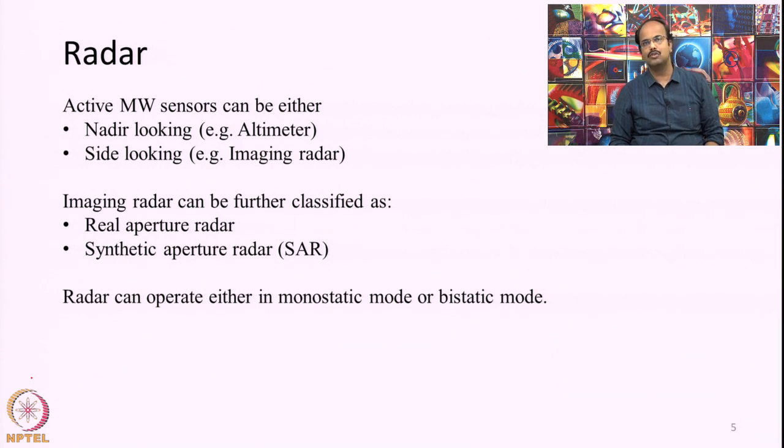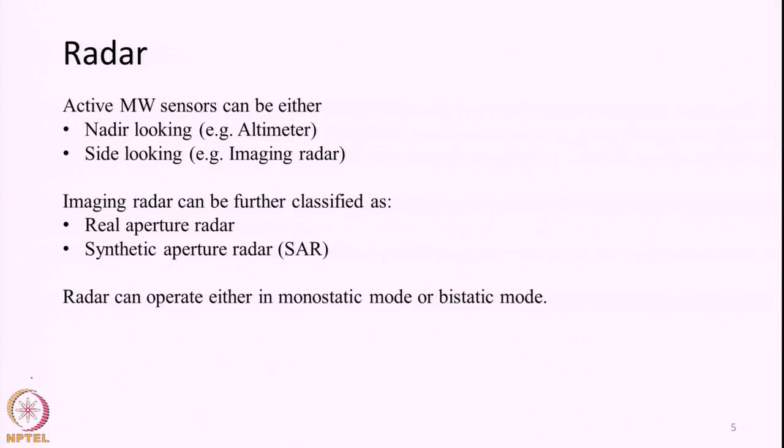The system can also measure the polarization of the electromagnetic wave being received. Polarization is the orientation in which the electric field is vibrating. That information can also be saved. Essentially, a radar sends some signal, measures it back, calculates the distance, calculates the power, and measures all these things to give us useful information.